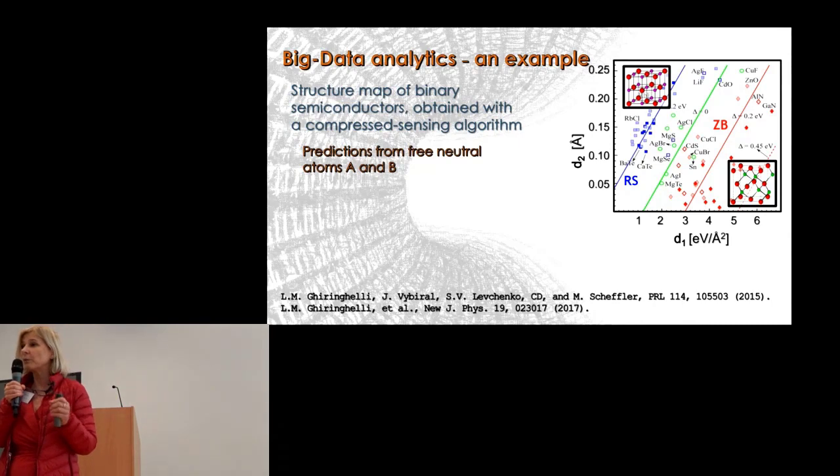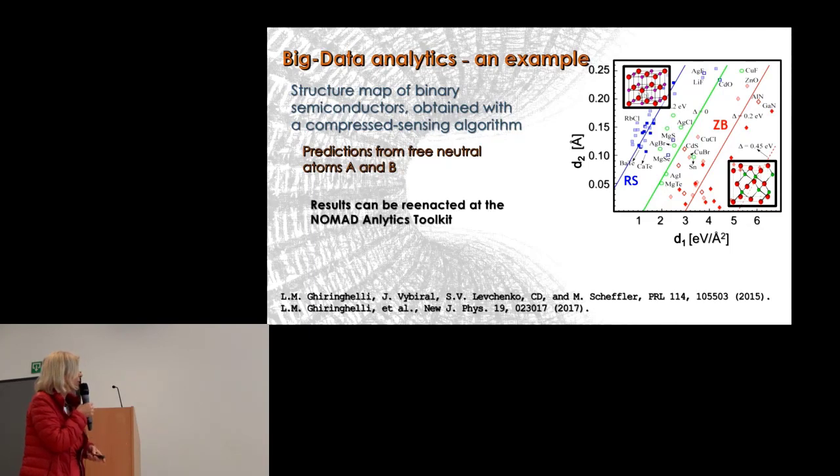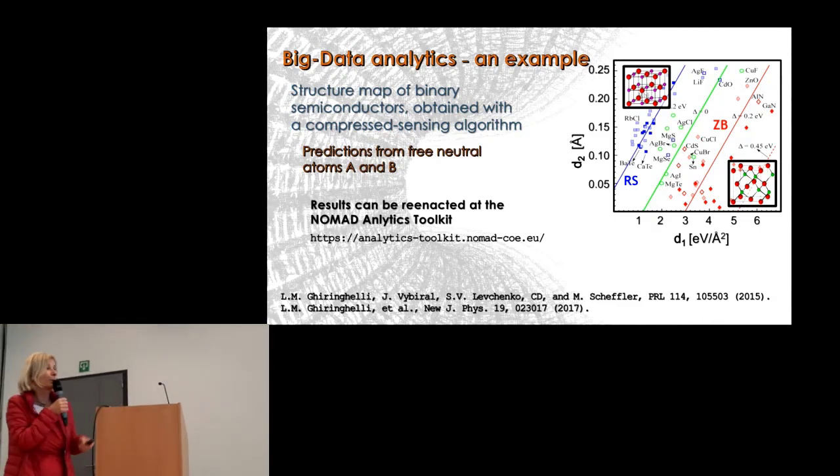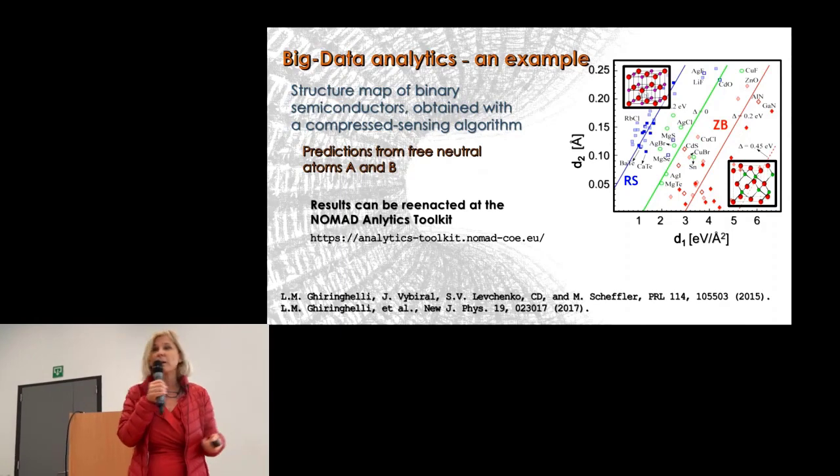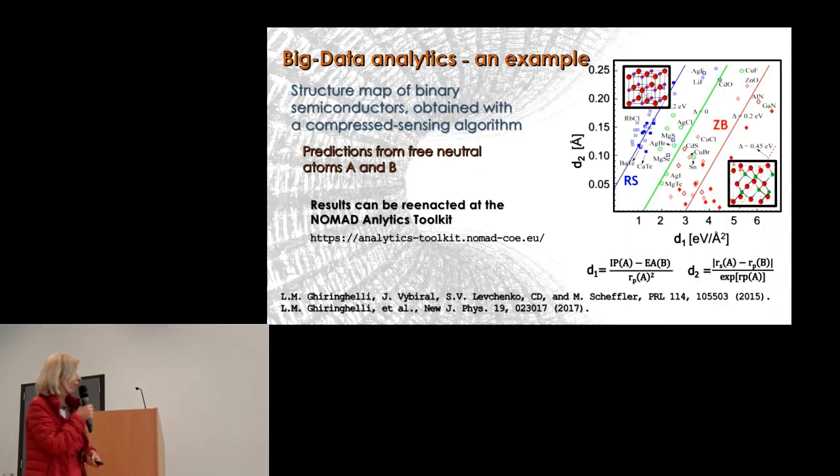This is very important: we used only properties of the elements A and B, not any property of the compounds. I'm not going into more detail due to lack of time, but if you really want to play with this, you can go to the NOMAD analytics toolkit. You can try all possible descriptors and see if you get the same solution we got.